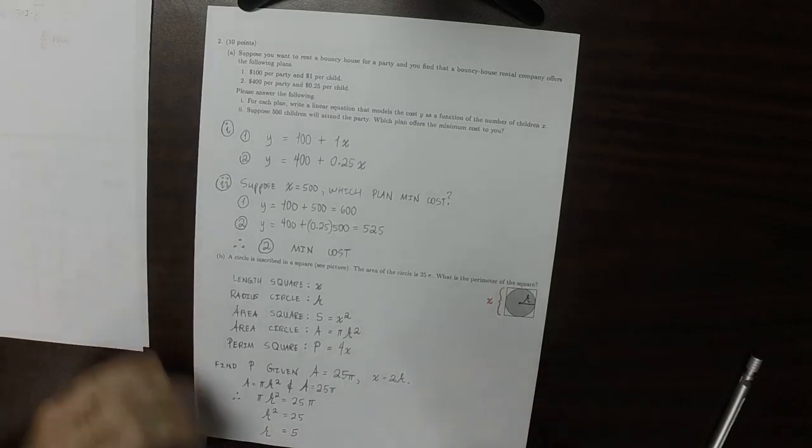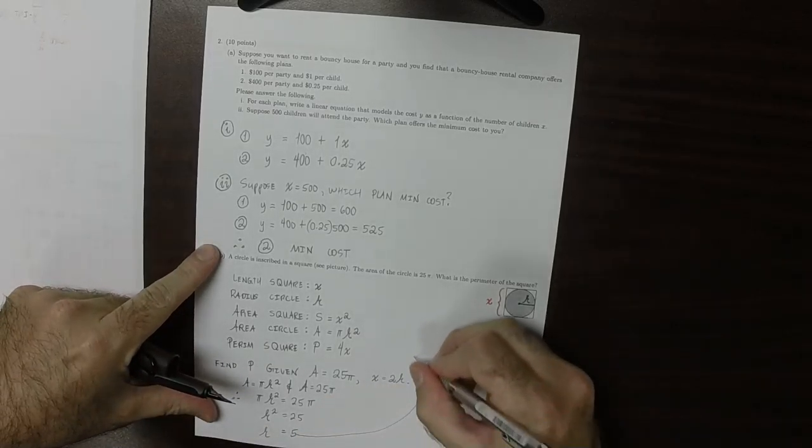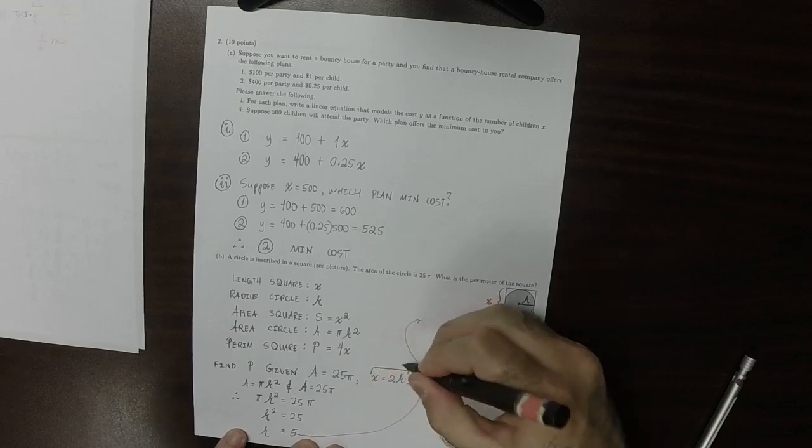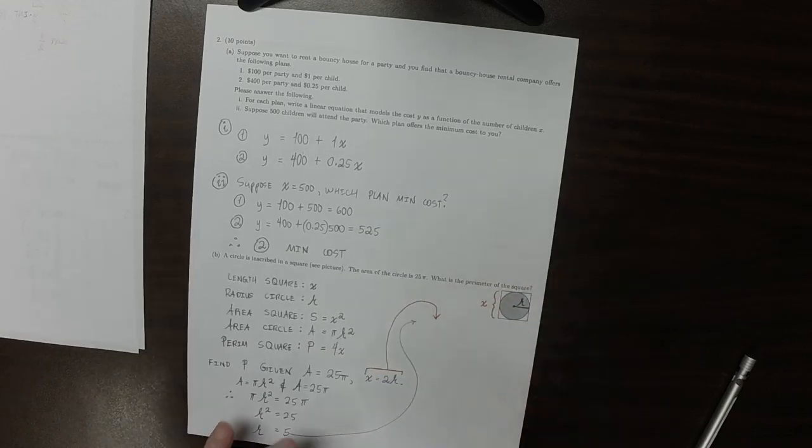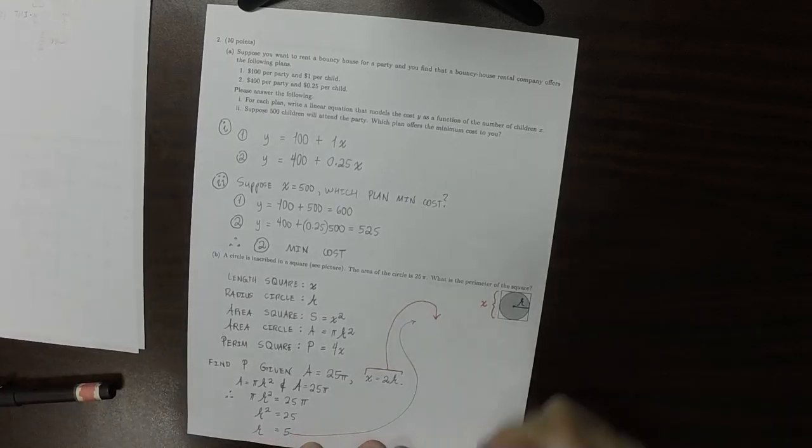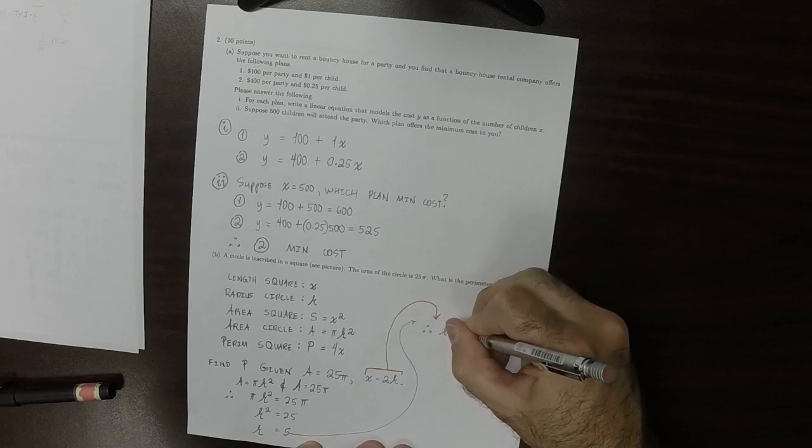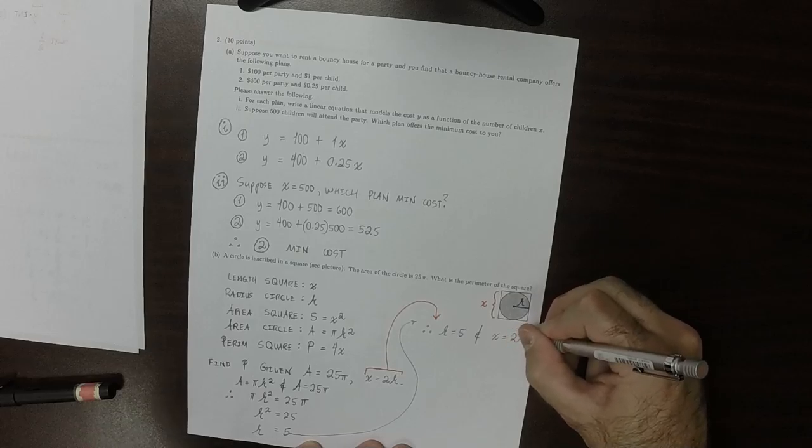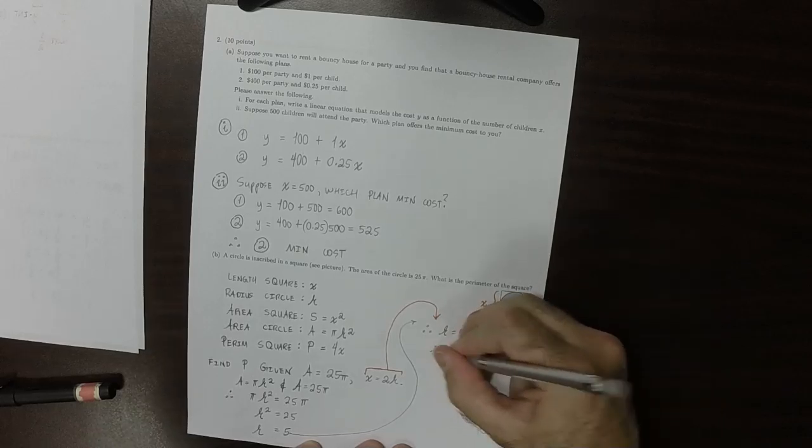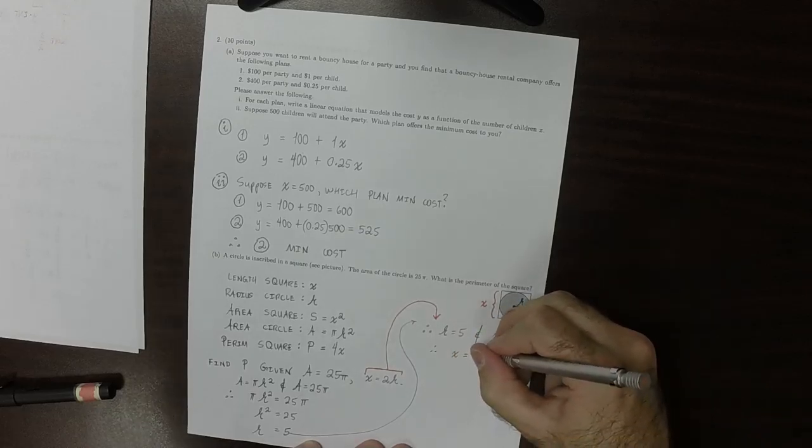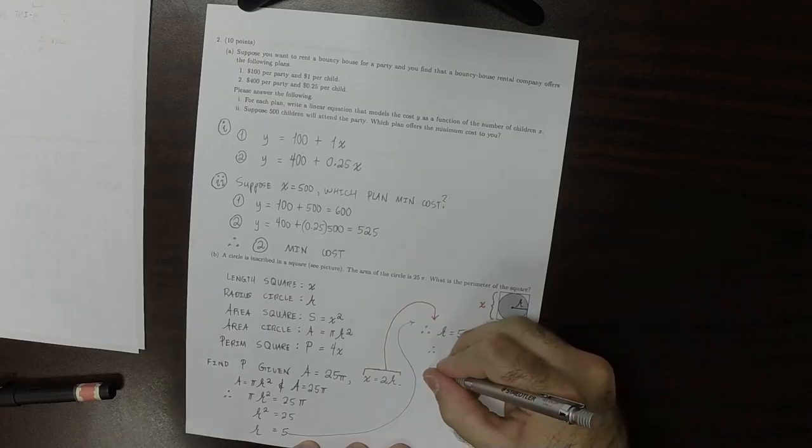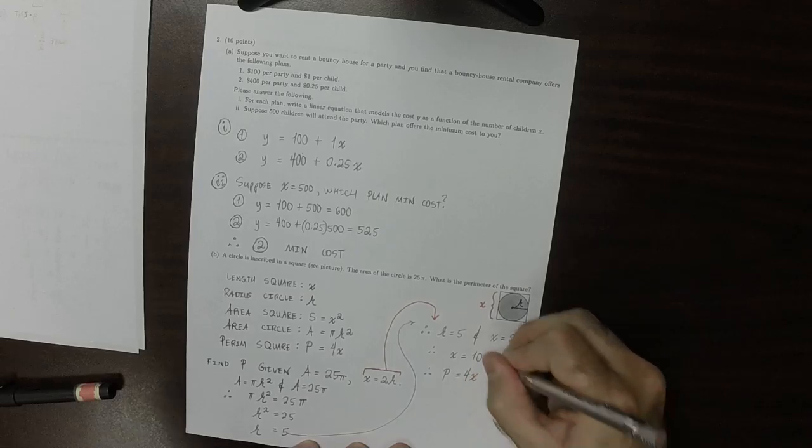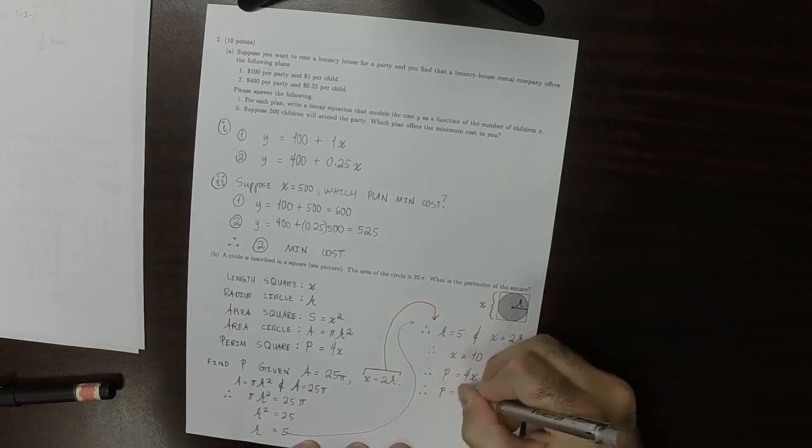And now I can use this information. So r is 5 and x is 2r. Therefore, x is 10. And therefore, the perimeter going all the way around is 4x and x is 10. Therefore, the perimeter is 40.